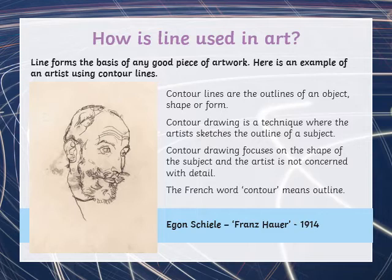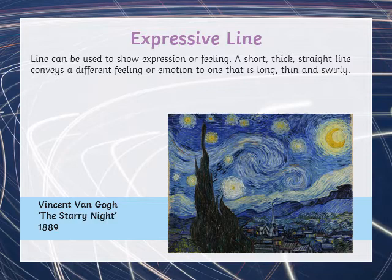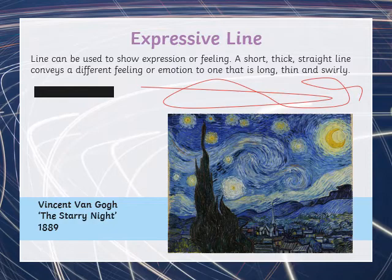Expressive line — lines can be used to show expression or feeling. A short, thick, straight line gives us one kind of feeling, and it'd be very different to perhaps a squiggly line, long and thin and swirling in different directions. What feelings do those kinds of lines evoke in you? Think carefully about that for a moment.